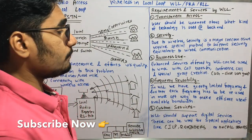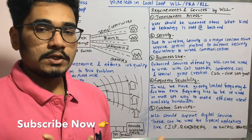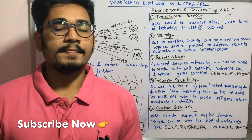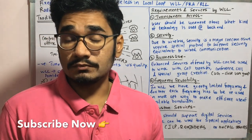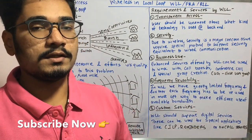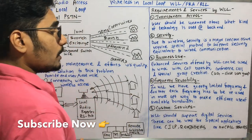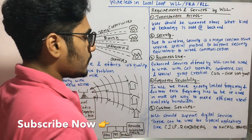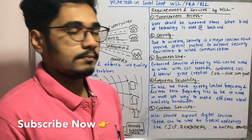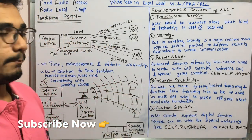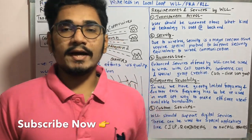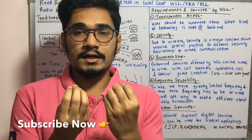Next we have business use. Enhanced services offered by WLL can be used for call transfers, conference calls, and special group creation. These are mainly useful for organizations where all information sent is confidential. In that case you require WLL, and there is a special type called CUG — Closed User Group — which comes under WLL. Next we have frequency reusability. In WLL we have greatly limited frequency, and each frequency has to be reused in the most apt form to make efficient use of available bandwidth.